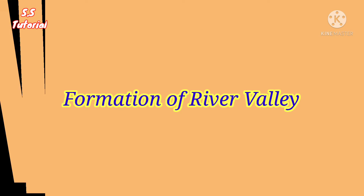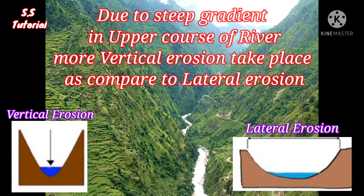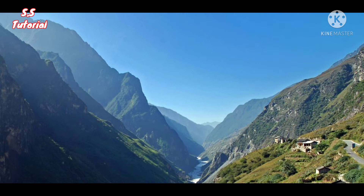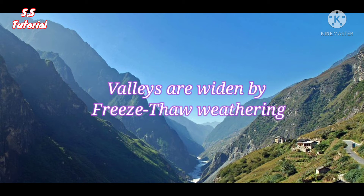River originates in highland or mountainous regions. Due to the steep gradient of the land, rivers flow quickly downhill. So the river cuts its flowing path very deeply as well as widely by hydraulic action, abrasion and solution. When the river erodes downwards, the sides of the valley are exposed to freeze-thaw weathering, which loosens the rock and makes the valley sides steeper.